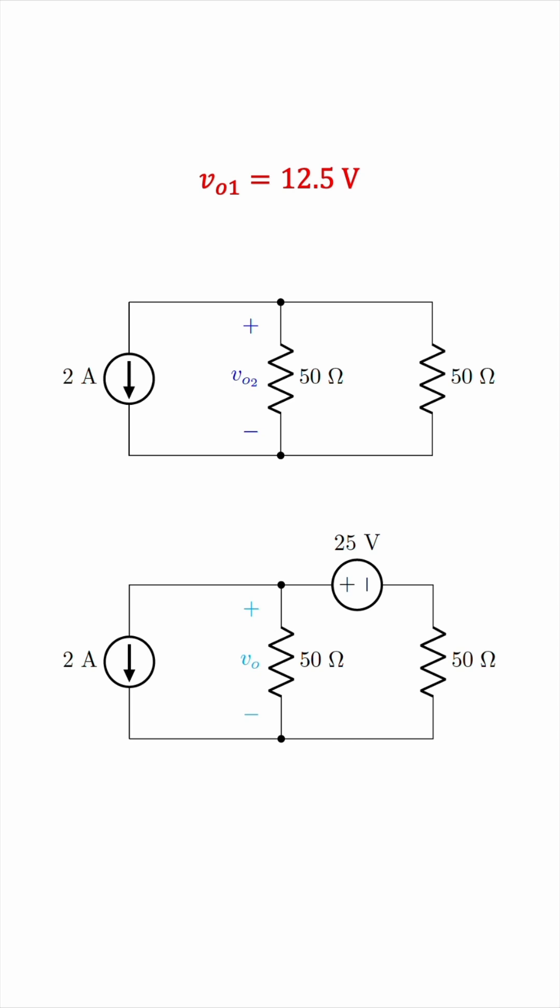Now, this is also very easy to analyze. It's a typical case of current division. You can find V02 by whichever method you prefer. For example, you can multiply the current through this 50 ohm resistor, which is negative 1, by the resistance, which is 50.